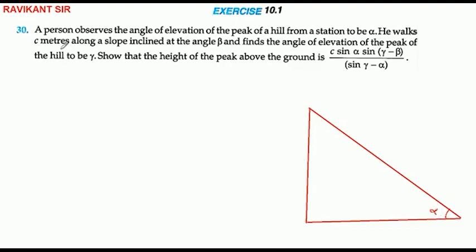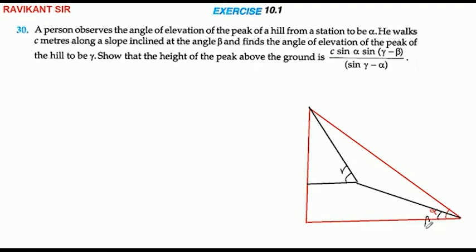He walks c meters along the slope inclined at angle beta। यहाँ से beta angle लेके वह आगे आता है। और फिर यहाँ से जब angle of elevation इसके peak को देखता है तो वह gamma हो रहा है। यहाँ gamma है, और इधर वाला angle beta होगा, तो यह वाला angle alpha minus beta हो जाएगा।